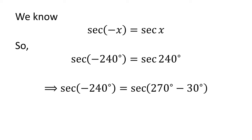As 240 degrees is equal to 270 degrees minus 30 degrees, secant of minus 240 degrees is equal to secant of 270 degrees minus 30 degrees.